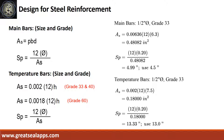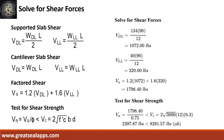The area of steel for temperature bars is 0.18 square inch, and the spacing for half inch diameter bar is 13 inches. The shear force for dead load is 1,072 pounds and for live load is 320 pounds, for a maximum shear force of 1,798.4 pounds. The nominal shear force is 2,397.87 pounds, which is less than 8,281.57 pounds.